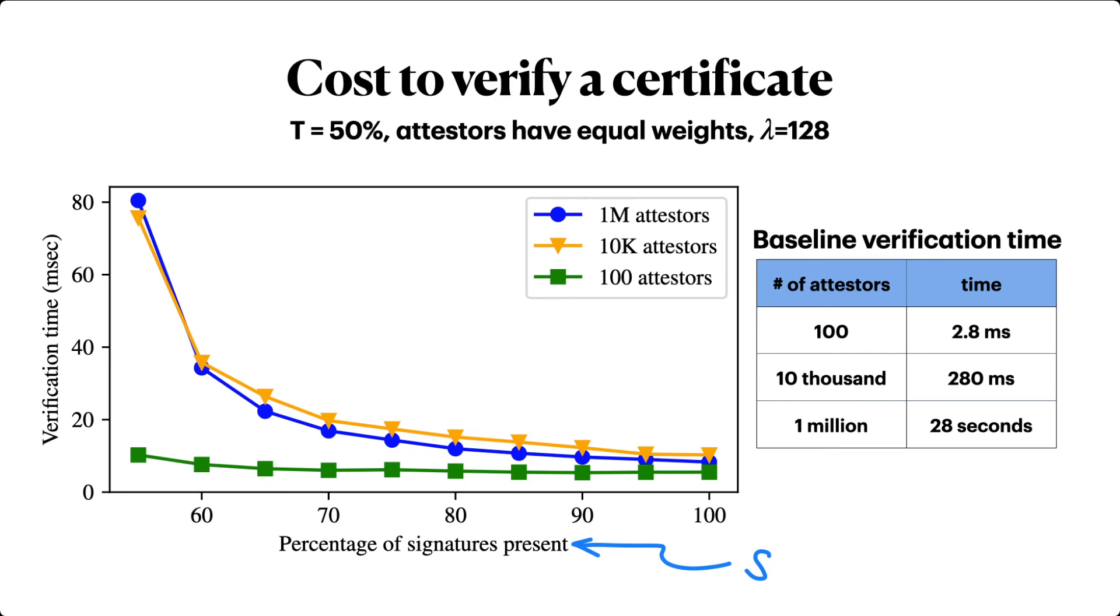In contrast, for the naive baseline, checking a certificate made by 100 attesters is slightly faster. But checking one for 10,000 and especially for 1 million attesters is much, much slower. For 1 million attesters, the difference in performance is a factor of 300 to 4,000.